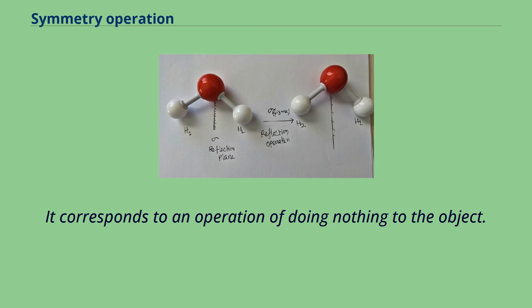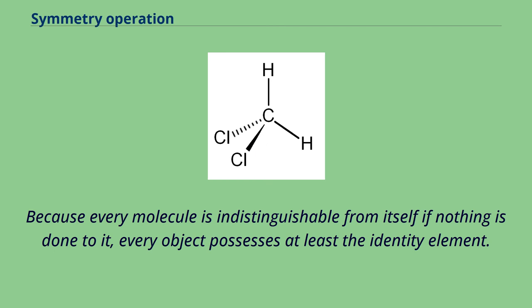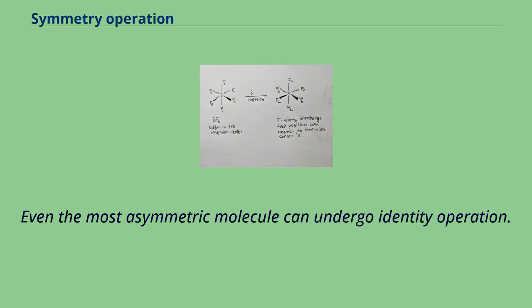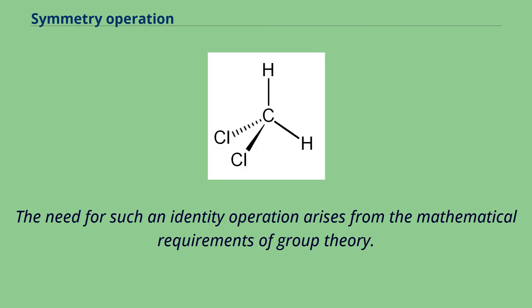It corresponds to an operation of doing nothing to the object. Because every molecule is indistinguishable from itself if nothing is done to it, every object possesses at least the identity element. The identity operation is denoted by E or I. In identity operation, no change can be observed for the molecule. Even the most asymmetric molecule can undergo identity operation. The need for such an identity operation arises from the mathematical requirements of group theory.